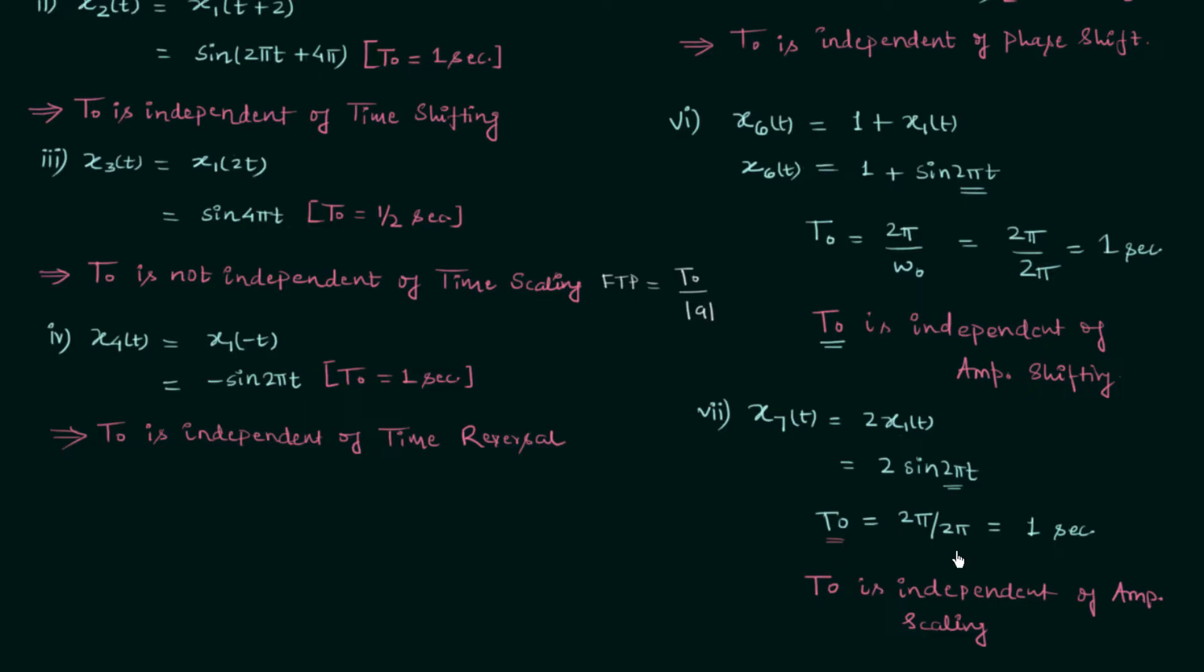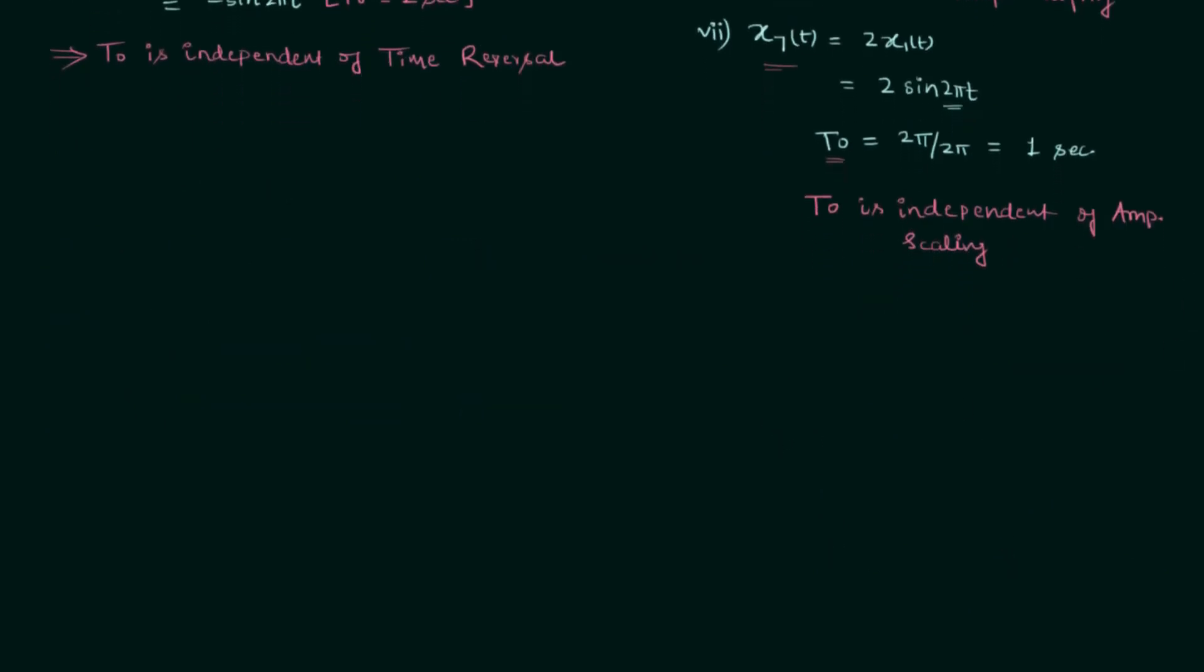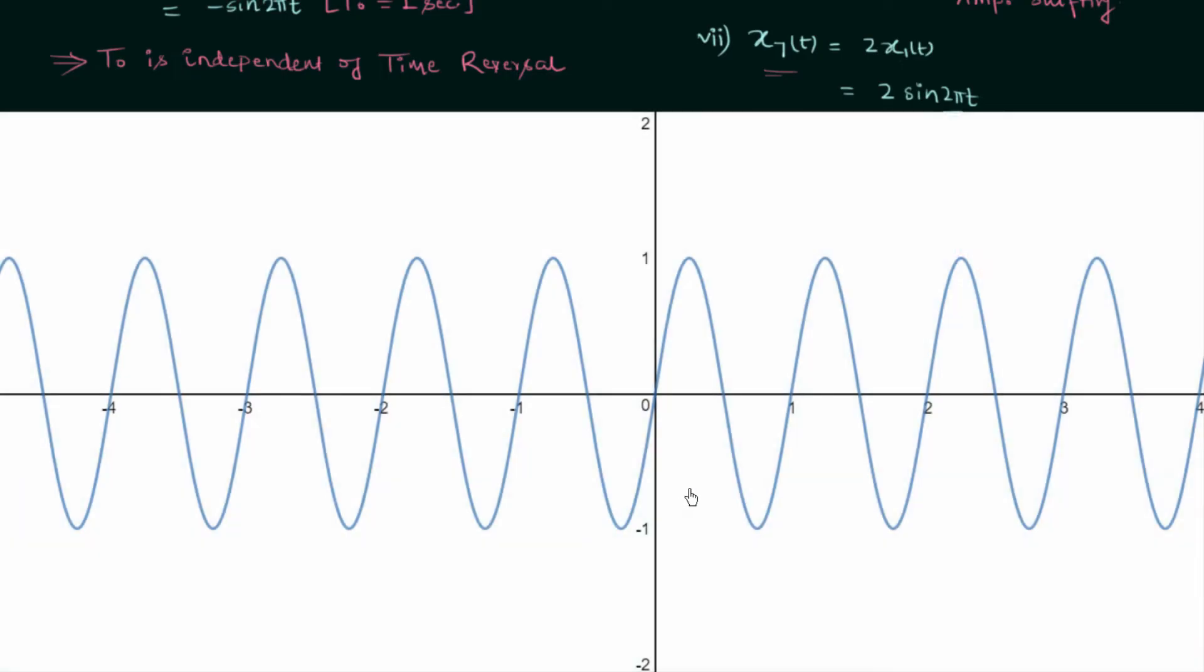We have obtained the time period following the mathematical formula. Now we will plot the waveform of signal x1(t) and signal x7(t) to find out the fundamental time period graphically. We have already seen the plot of signal x1(t) in the previous lecture. It is simple sin(2πt) plot and now we will plot the waveform of signal x7(t).